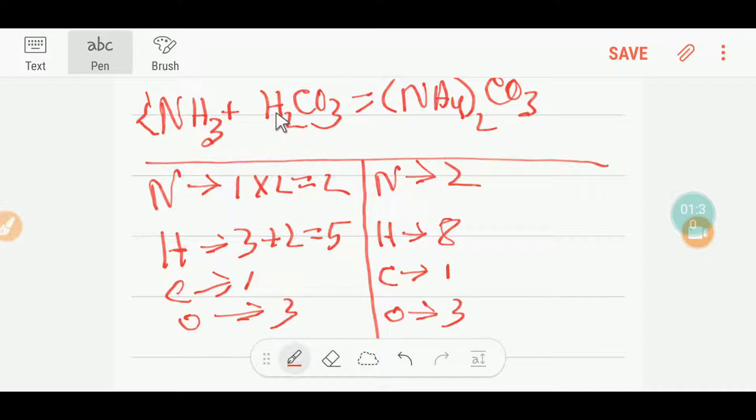Let me update my hydrogen: six plus two gives me eight. Now I'll look at the number of atoms from both sides. We have two nitrogen, two nitrogen, so nitrogen is balanced. We have eight hydrogen, eight hydrogen, so hydrogen is balanced.